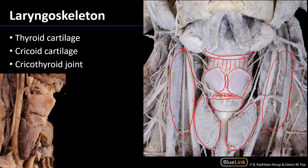Now looking over here on the left-hand side of the screen, we see a right lateral view of the larynx. I'll outline the thyroid cartilage here. The thyroid cartilage is incomplete posteriorly, so it is most robust anteriorly. We can see here a superior horn and there is the inferior horn. That inferior horn of the thyroid cartilage articulates with the cricoid cartilage to form the cricothyroid joint.